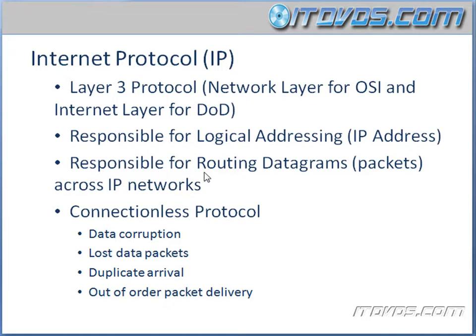IP is also responsible for routing datagrams, which are also known as packets, across IP networks. When we're talking about Layer 2 of the OSI model, we're just talking about routing or switching frames within a single network. Whereas IP is responsible for taking those frames, encapsulating them into packets, and routing them to the correct network. At that point they get delivered as frames. So without IP at Layer 3, we couldn't go across networks.